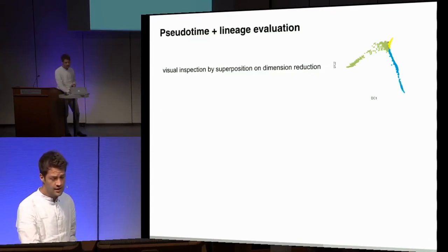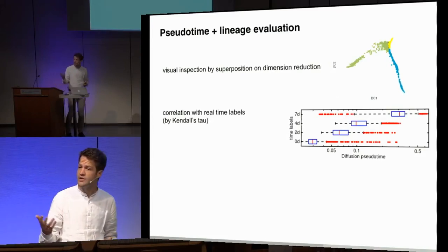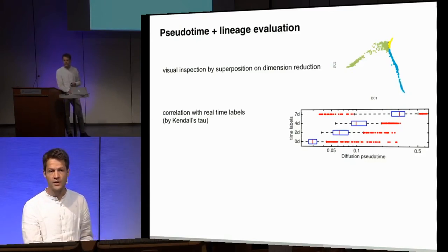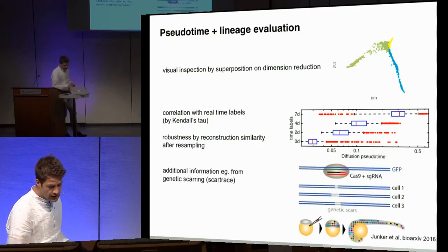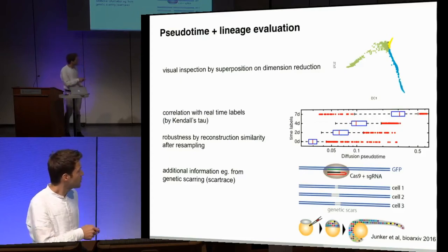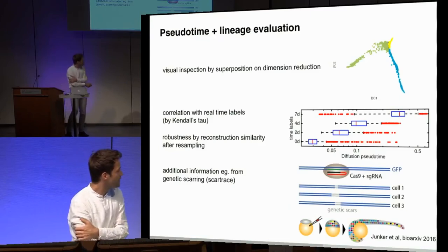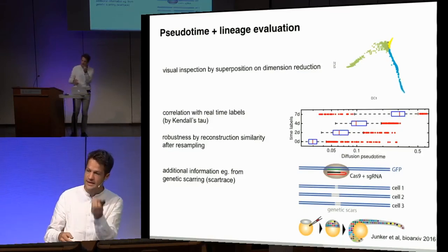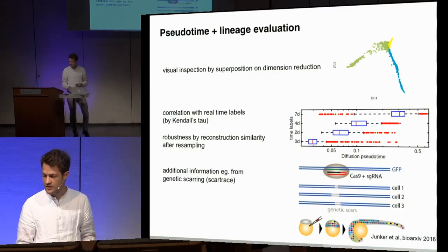I'm sure most of you counted the number of algorithms I showed — 25 or so. Each of these algorithms has its own set of parameters, so how do we actually choose one and how do we evaluate them? Very common is visual inspection, which is a very good start, but as a follow-up if you really have time labels you could try to correlate your pseudotime with time labels. For the hackathon you could look at robustness of the reconstruction. Very promising is also using real genetic information — for example a method by Jan-Philipp Junker called ScarTrace, where they have genetic scars and you can learn about cells that are downstream from others, then combining this with transcriptomics.